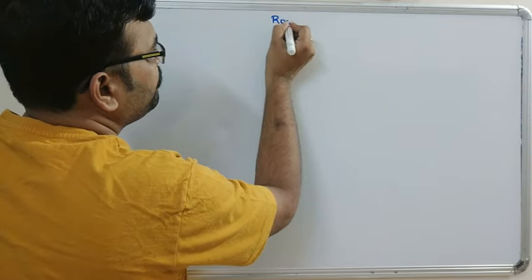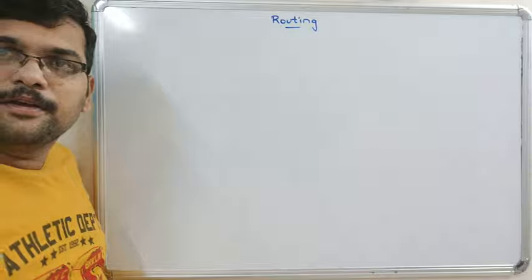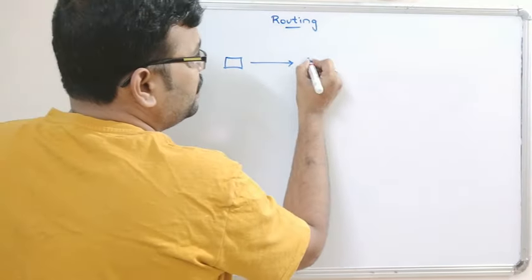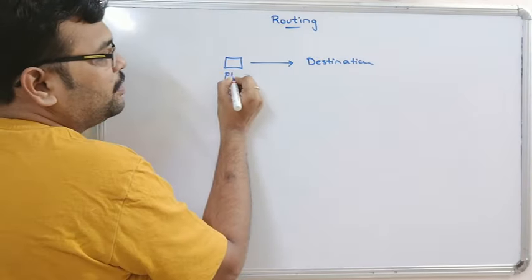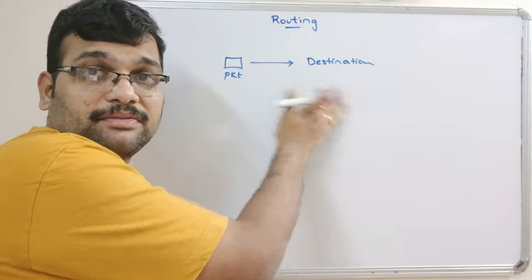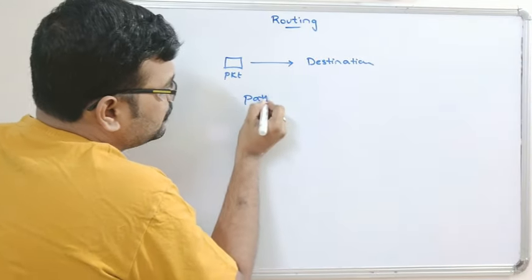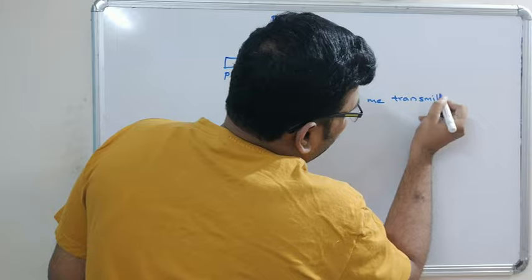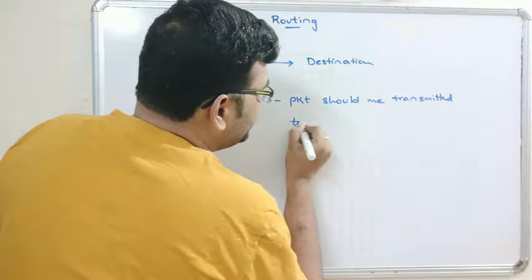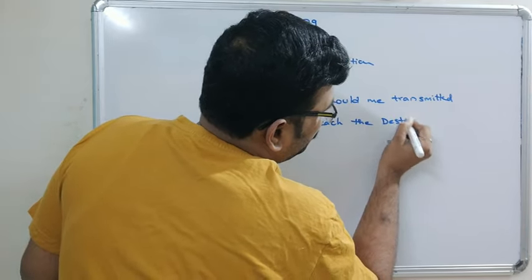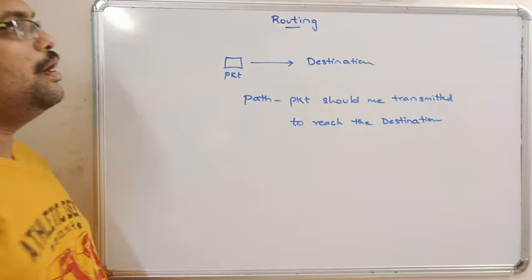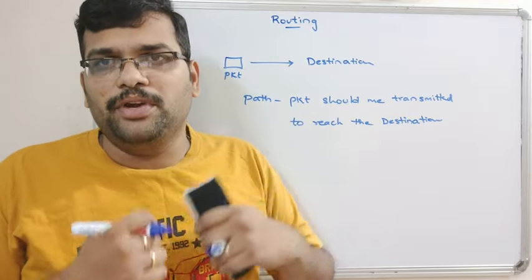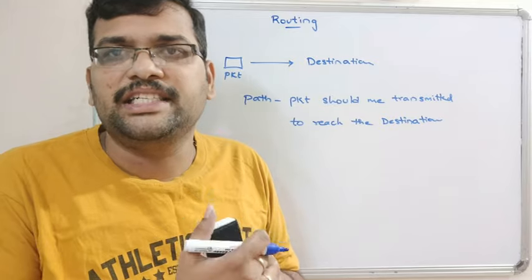Coming to routing — routing means we know that in a network the packet should be sent from source to destination. So this packet should be transmitted to the destination from the source. In which path the packet should be transmitted to reach the destination? There may be a number of possible paths available, but which path we are going to select to send this packet to the destination — that is the main goal of routing.